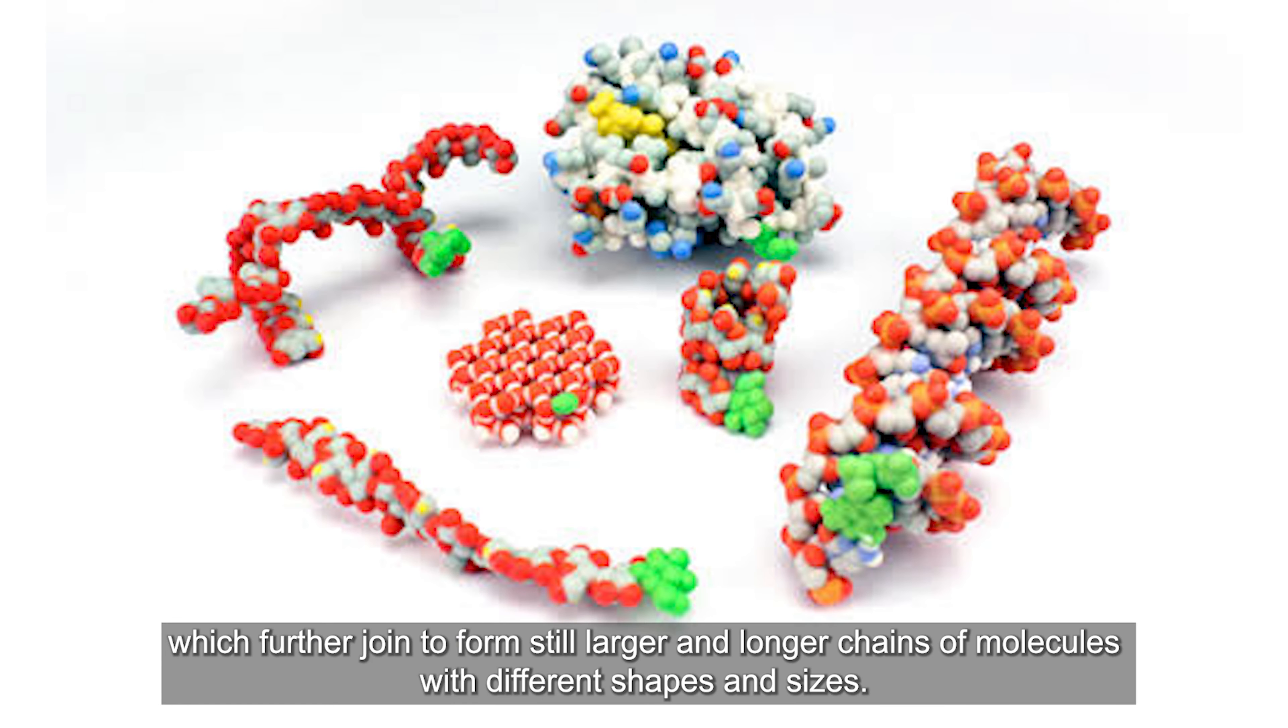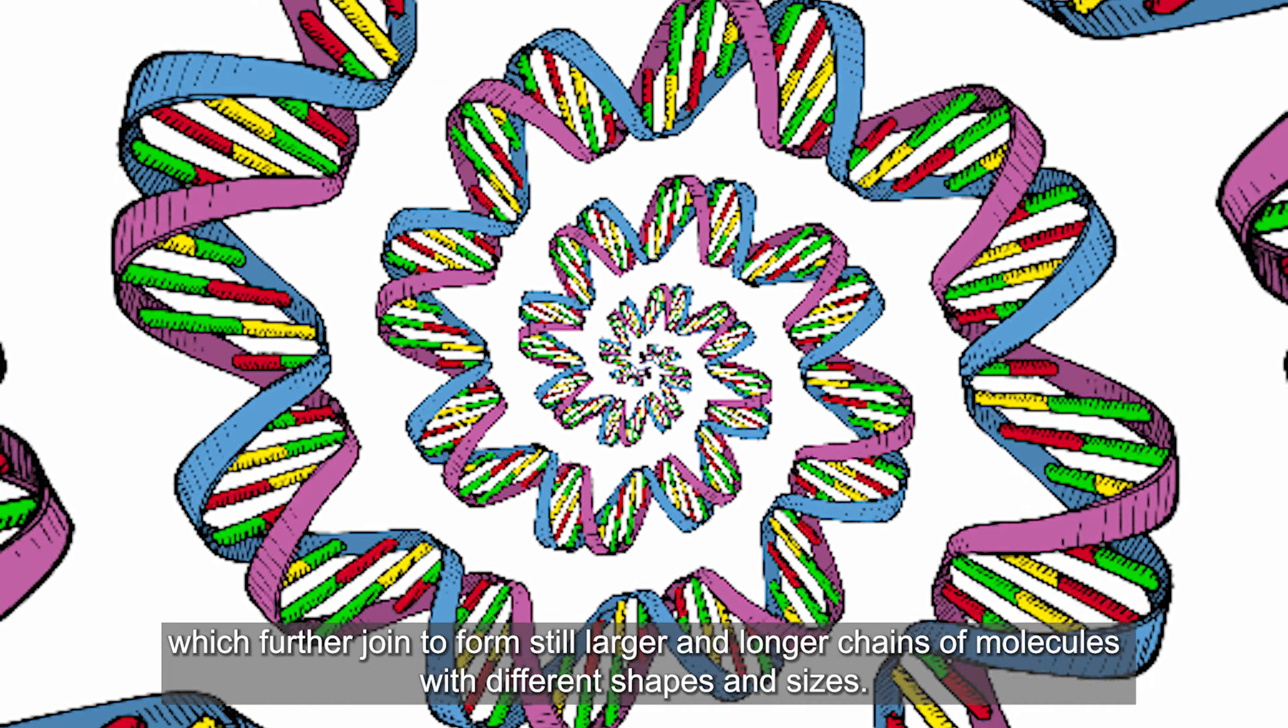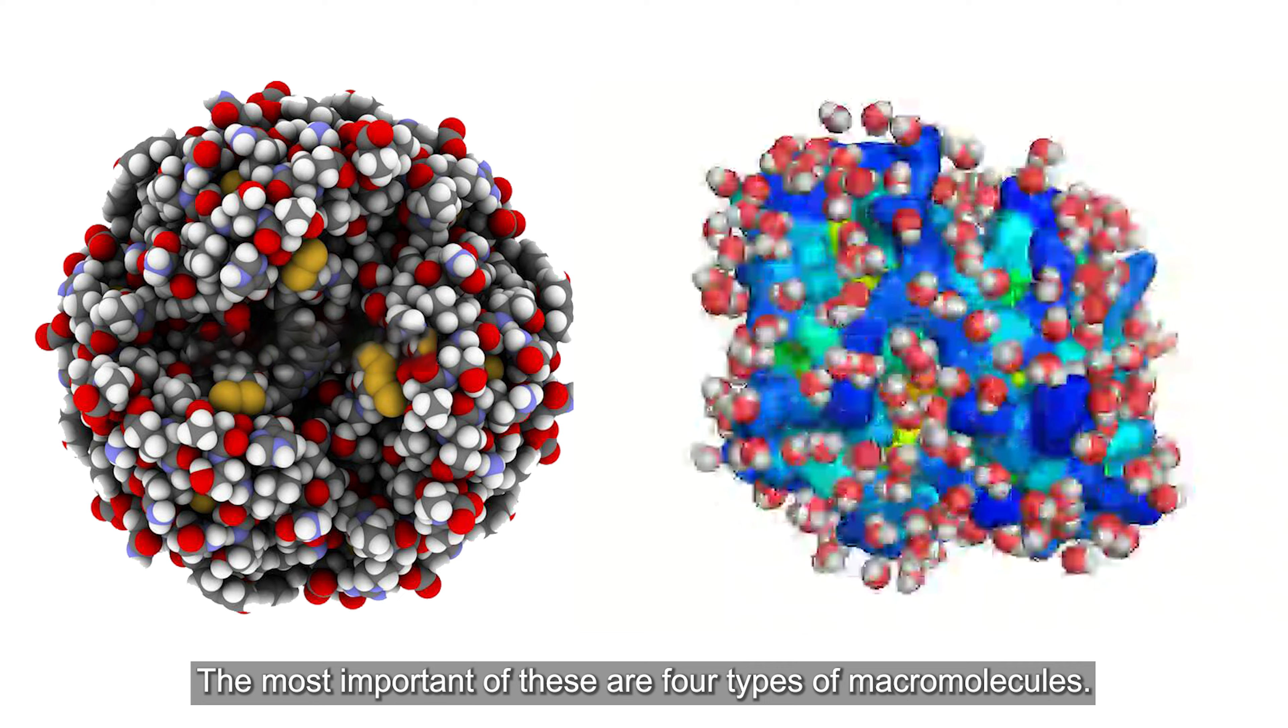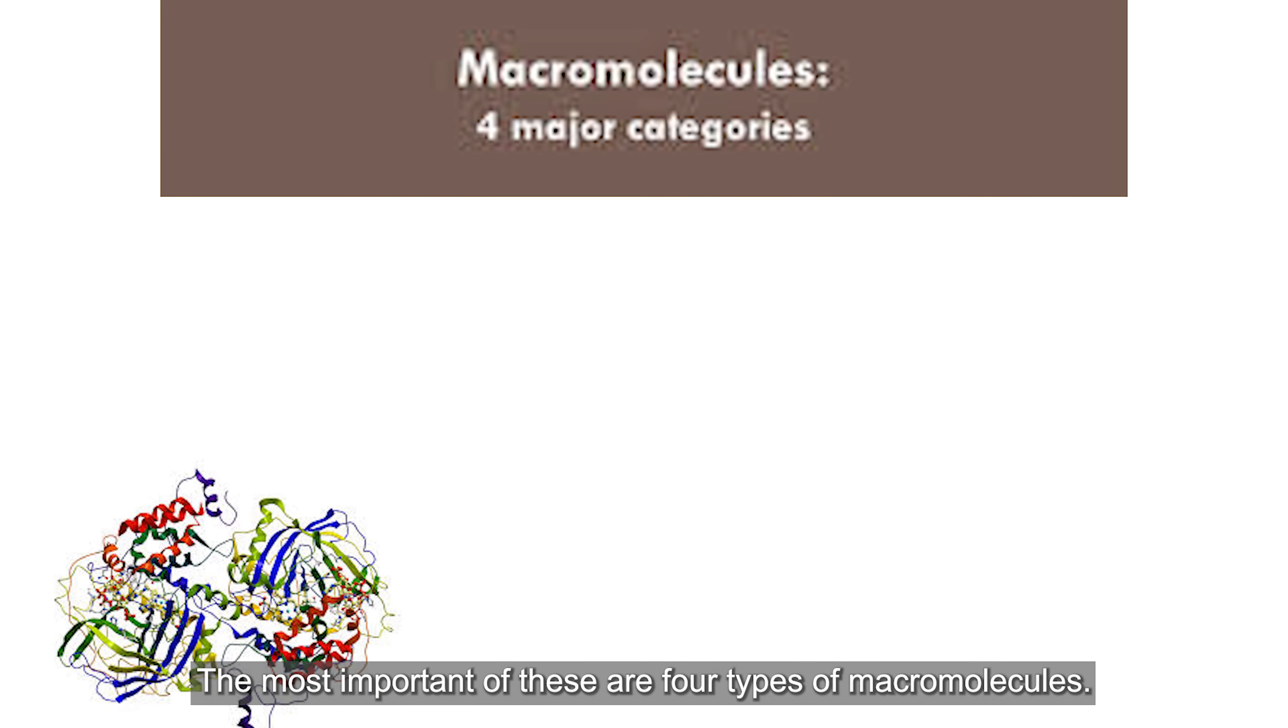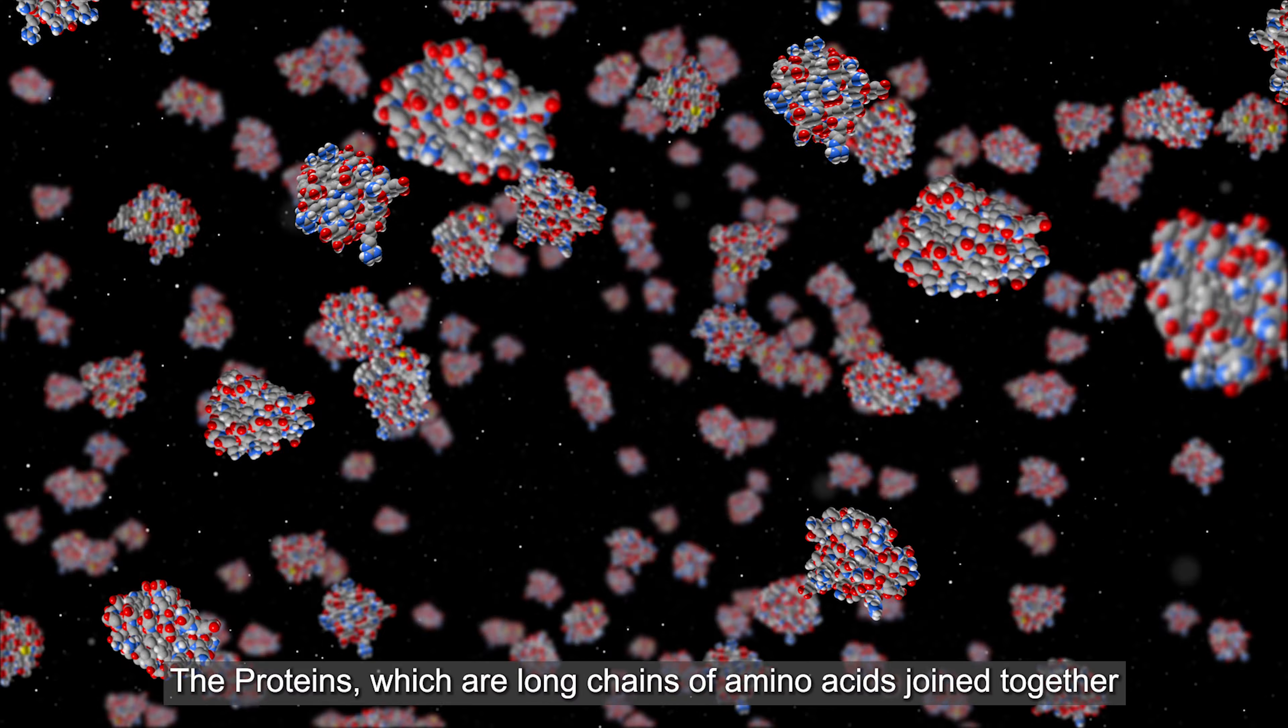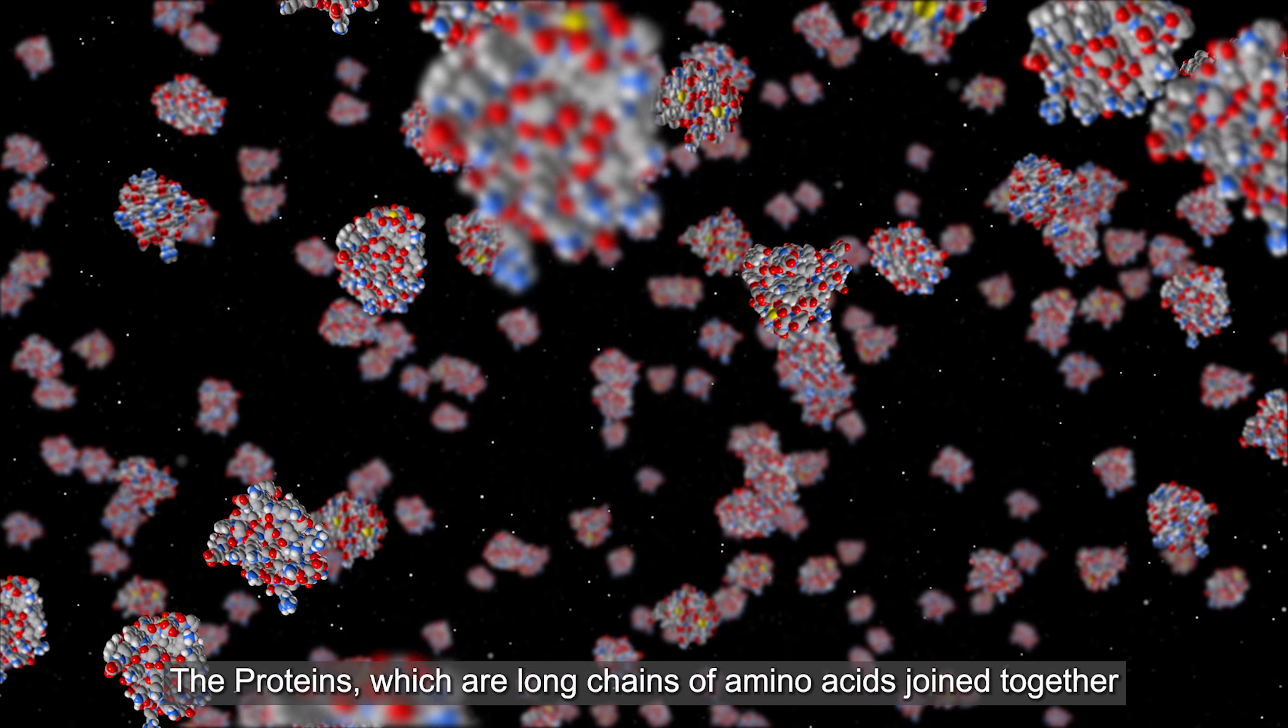Two or more atoms combine to form a molecule like carbon dioxide, water. And several molecules combine and react with each other to form larger and more complex molecules, and which further join to form still larger and longer chains of molecules with different shapes and sizes.